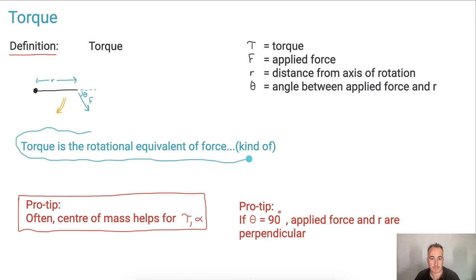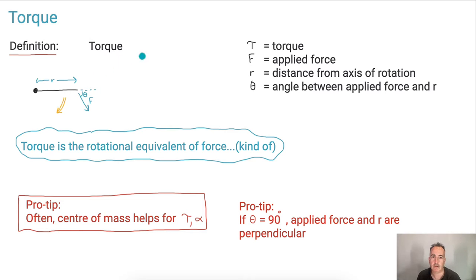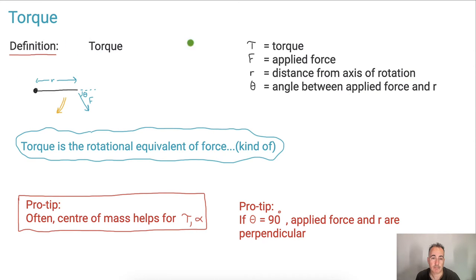Now, how is that the case? We've got this idea about torque. It's easier to calculate than it is to understand, weirdly enough. So to calculate it, we have an equation in our data booklet. Torque is given by the symbol tau — that's a Greek symbol — and it's equal to F times R times sine of theta. So F·R·sin(θ) is our equation.